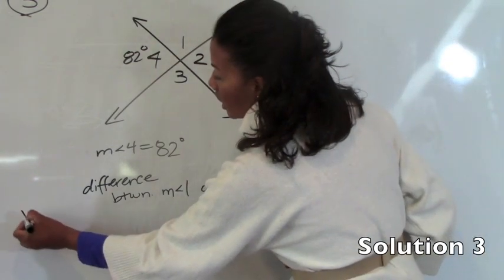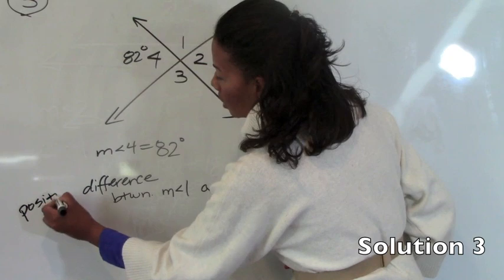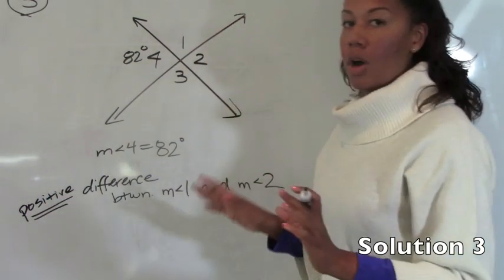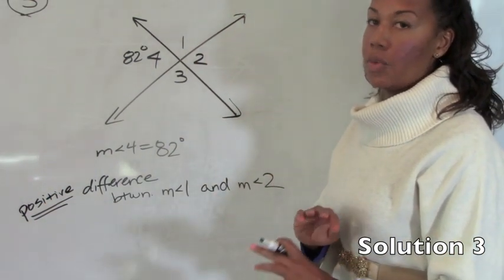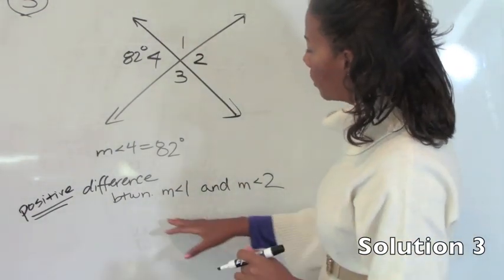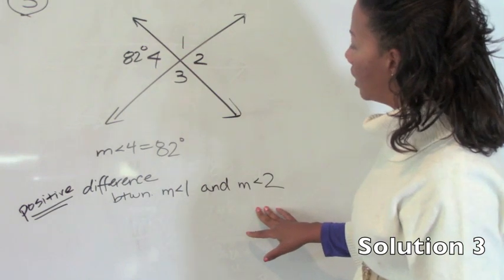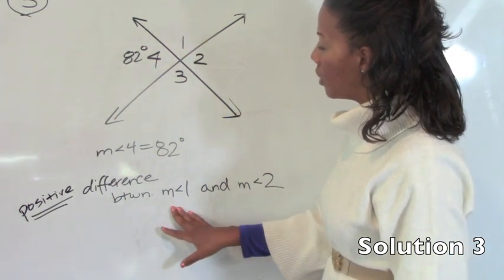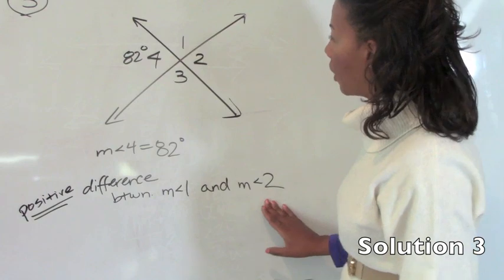The question actually says the positive difference so that way if we subtract in the wrong order and we get a negative we know that we have to switch the order that we're subtracting. So they want the positive difference between the measure of angle 1 and the measure of angle 2, which means we need to find the measure of angle 1 and we need to find the measure of angle 2.